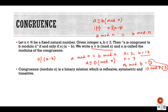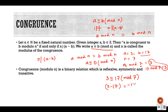Both divided by 7 give the same remainder, so we can say that 3 is congruent to 17. We can also verify: 3 minus 17 equals minus 14, and 7 divides minus 14. So that means 3 is congruent to 17 with mod 7.